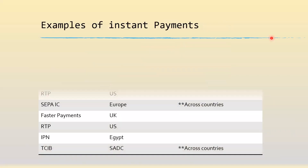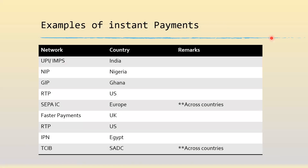Some examples of instant payments across the globe: we have the popular Unified Payment Interface (UPI) and IMPS in India, which handle billions of transactions every month. Then we have NIP, the Nigeria Instant Payment, and GhIPSS Instant Pay of Ghana respectively. In the US there is RTP, Faster Payments in the UK, and the Instant Payment Network of Egypt. These are national domestic networks which facilitate instant payments.